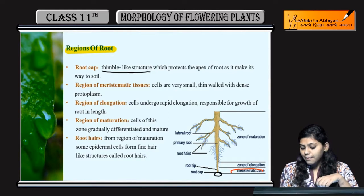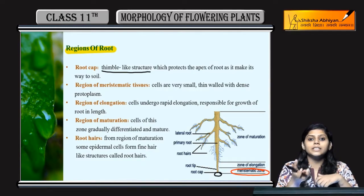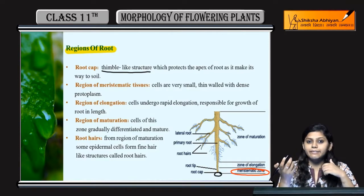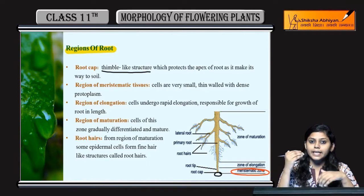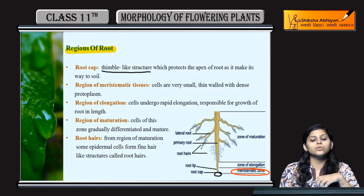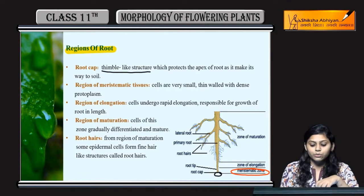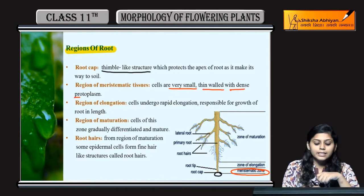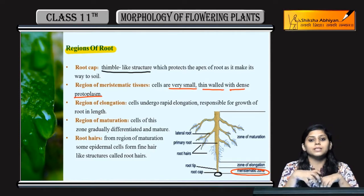Next is the meristematic zone. Meristematic tissues joh continuously divide kerti rehti hain — yahaan bhi meristematic zone me continuously dividing cells hootay hain. Joh ki bahut small hootay hain. They are thin, formed with dense protoplasm.